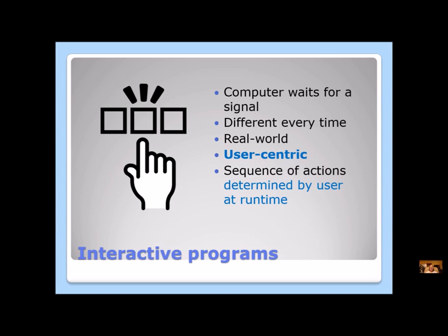In Alice, we can make our programs interactive, so the computer can wait around for your signal and then do something when you tell it to. Your programs can be different every time, more like the real world, more like gaming. We call this user-centric because the sequence of actions is determined by the user at runtime, not by the programmer. When the user determines when to do something, that's what makes our programs interactive.